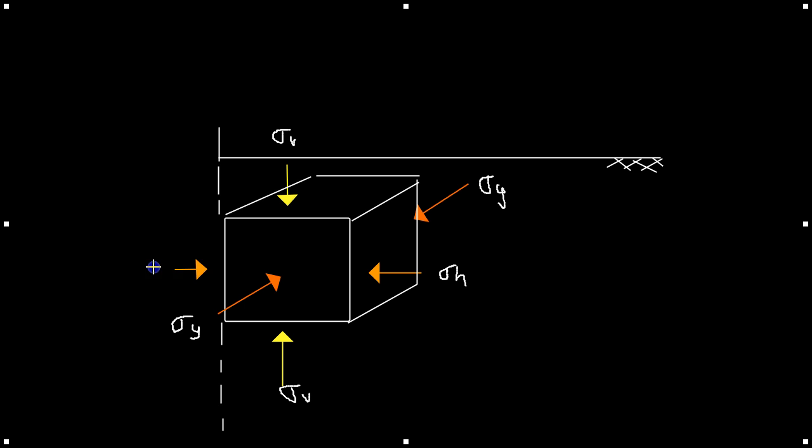Now, we can see that by removing this sigma-h there's now an imbalance of forces and the system is taken out of equilibrium. The result is a translation to the left.